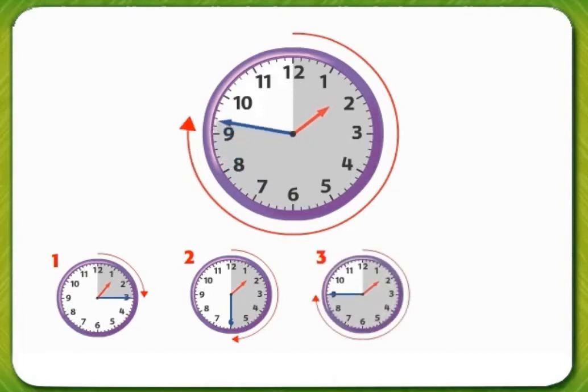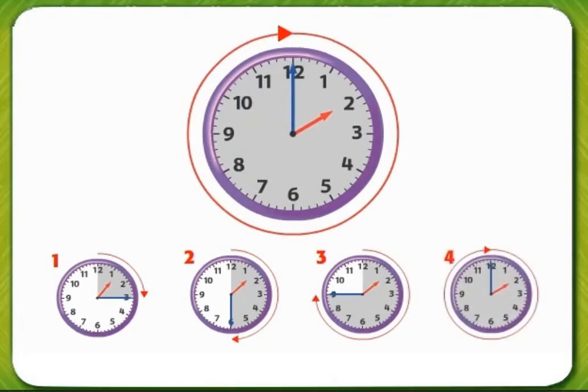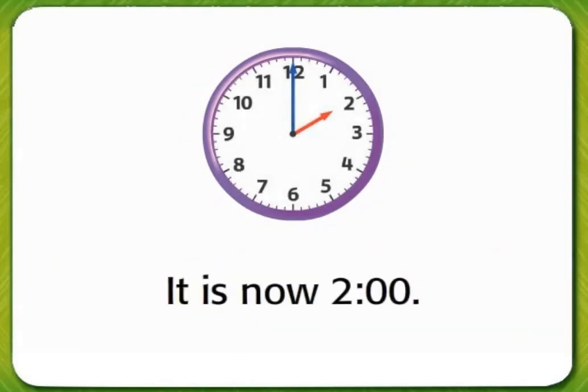And from 1:45 to 2 o'clock is four quarter hours. So four quarter hours or one hour have passed. It is now 2 o'clock.